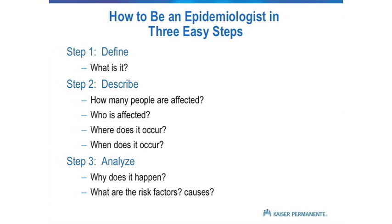There are just three easy steps to being an epidemiologist. First, we define the condition we're studying — what is it? Next, we describe it: who has it, how many people are affected, who are they, where are they, when does it occur? And then finally we analyze — we look at exposure-outcome associations and try to answer why this happens, and what are the risk factors and hopefully the causal factors.